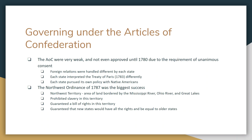The Northwest Ordinance prohibited slavery in that territory — no slavery allowed in any of those places. There was a guaranteed Bill of Rights in that territory. It set up townships and tax districts, and if you fly over the Midwest you'll notice things look like a square quilt — that's part of the Northwest Ordinance still visible today. But probably the most important thing it did was guarantee that new states would have all the rights and privileges of old states. So if Washington DC, Puerto Rico, or New York City became a state, they'd have all the rights of the very first state, Delaware. There's no hierarchy — all states are guaranteed to be equal.